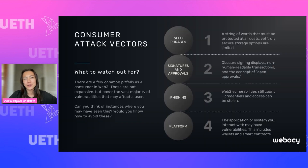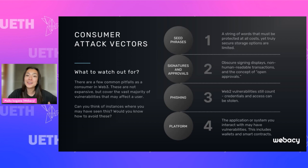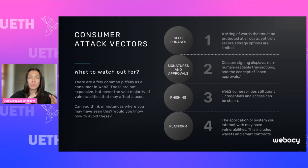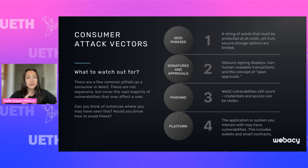Talking about potential consumer attack vectors — it's not limited to these four, but these are the ones I personally see most frequently. First, seed phrases — the most archaic piece of blockchain technology in my opinion. It's a 12 to 24 word phrase that keeps your assets safe. It's a double-edged sword: it's secure, but if you lose it you can't access your own assets, and if you store it somewhere convenient, it's also convenient for hackers. Second, signatures and approvals — probably the trickiest and most important category. How do you know what you're signing? Maybe you don't read the code, or it's actually hard to navigate. Signatures and approvals are one of the biggest ways you can get your wallet drained.